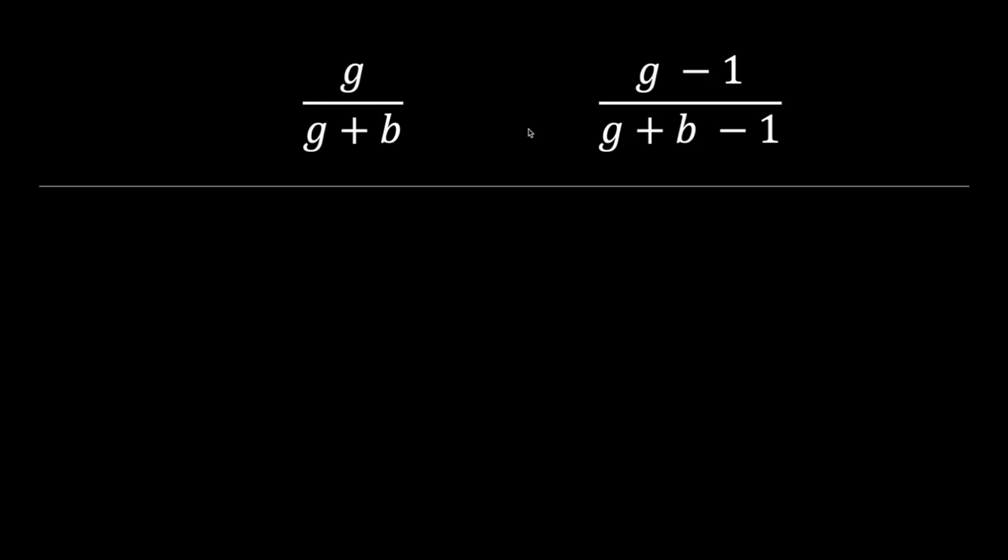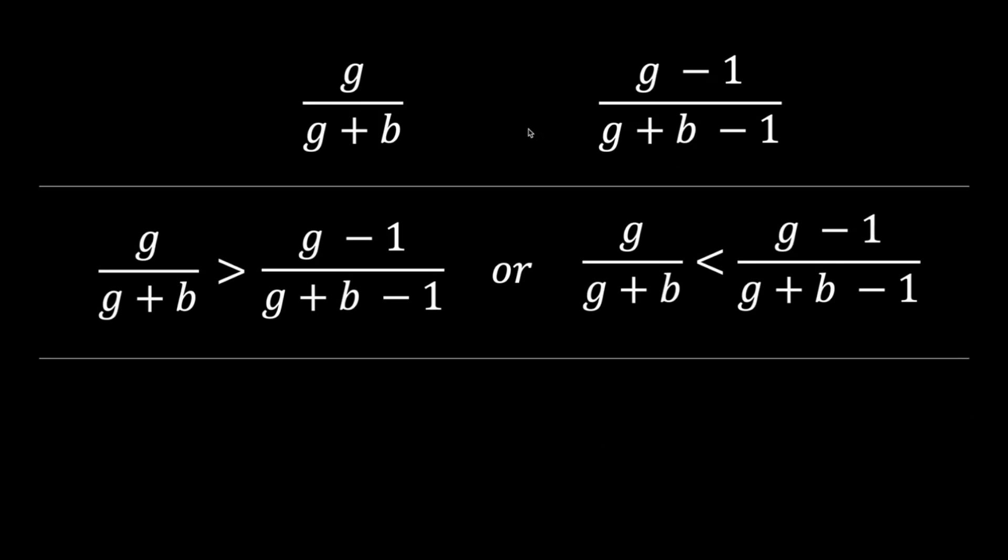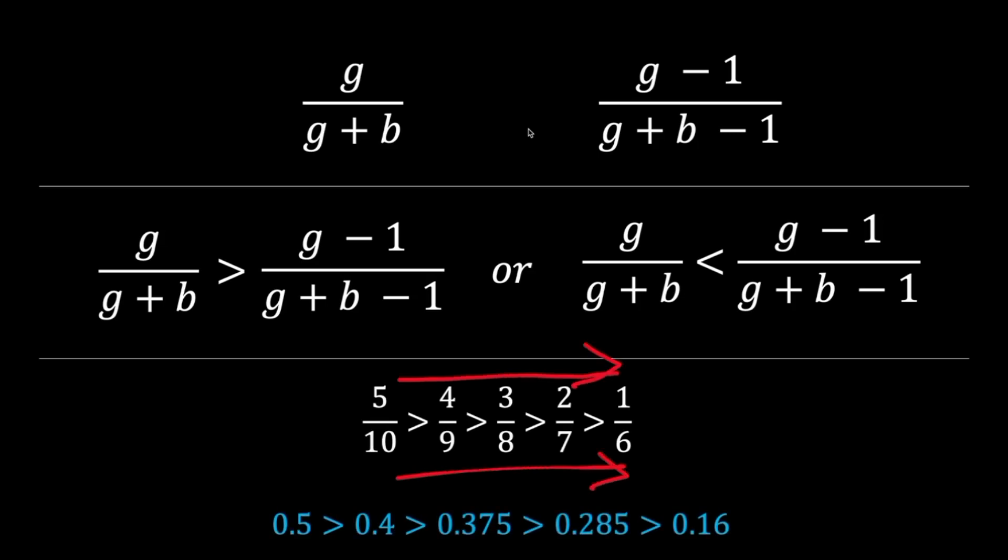But the two terms we have are different though. So which one is bigger? The left or the right? Given a proper fraction since g and b are positive integers, what happens when we subtract 1 from the numerator and denominator? Starting from a toy example, 5 over 10, and subtracting 1 from the top and bottom, this results in smaller numbers. Hence, the terms with the subtractions are always smaller.